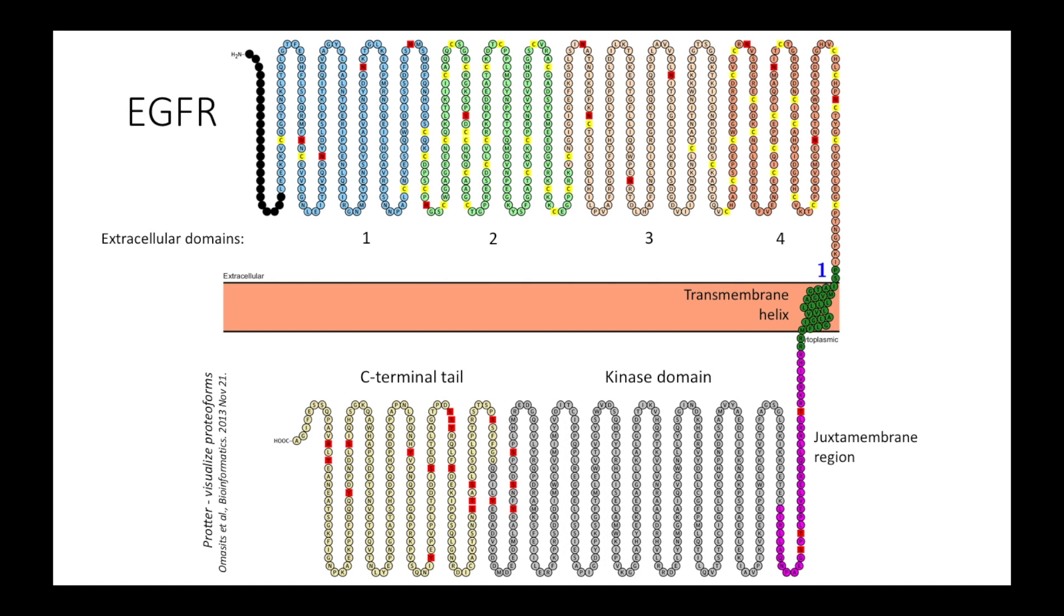Also note the red-labeled residues in the C-terminal tail. These are sites of tyrosine autophosphorylation. By trans-autophosphorylation of the C-terminal tail, an active EGFR can recruit SH2 domains and target proteins for further phosphorylation or downstream signaling.